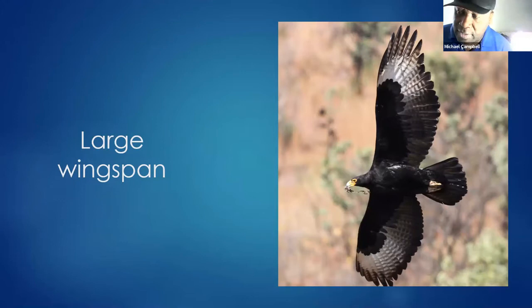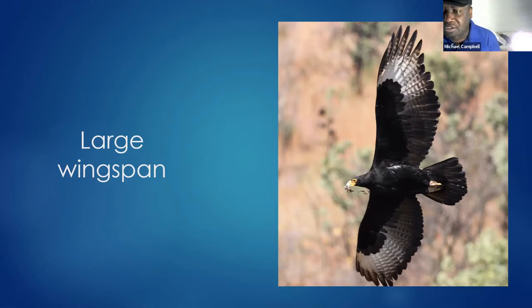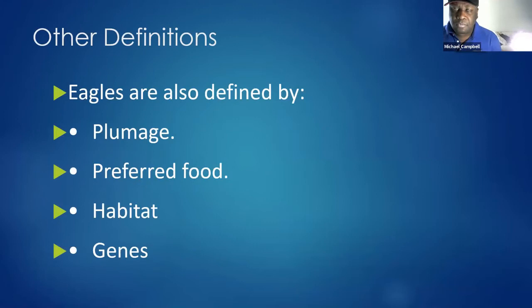This is the Verreaux's eagle of east and southern Africa — a large black eagle. You can see the wings are very wide in the middle part and there's a very large tail. This is for killing antelopes, large rodents, and sometimes birds, and for lifting prey off the ground. So those are the three most important definitions of eagles: the wings, the claws, and the beak, which distinguish them from other birds of prey including vultures.